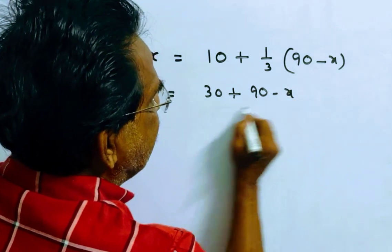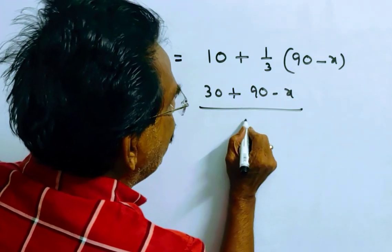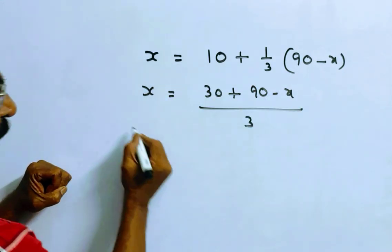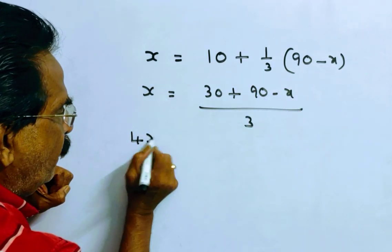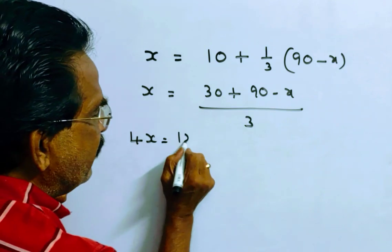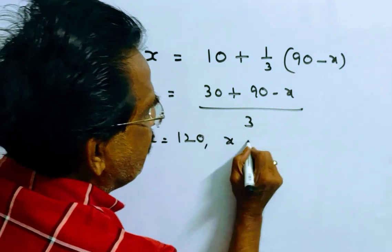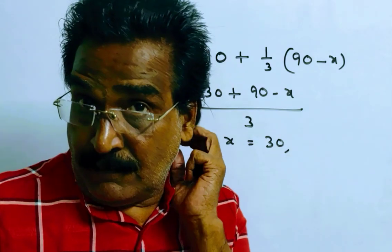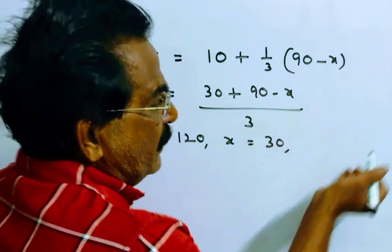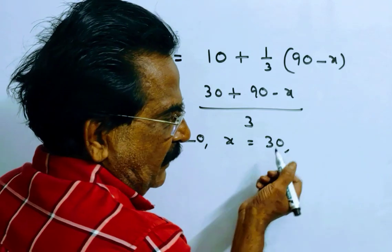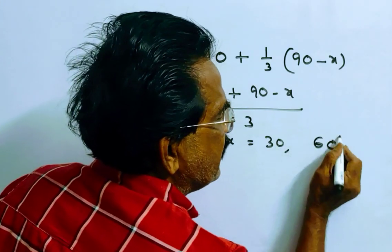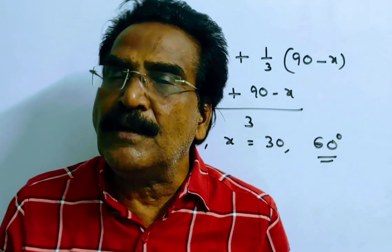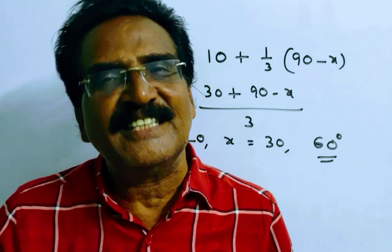Solving: 3x equals 30 plus 90 minus x, which gives 4x equals 120, so x equals 30. We want the greater angle, which is the complement of 30, that is 60 degrees. So the answer is 60 degrees.